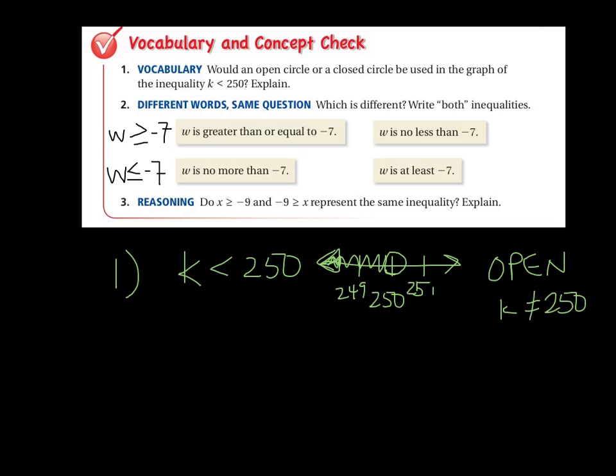How about w? If w is no more than negative 7 is there, this one is w is no less than negative 7. Well, could it be negative 7? Yes, it could. It just can't be less, so it's greater than or equal to.